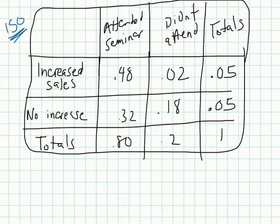So the question is, what's the probability that someone who attended, so we're looking at who attended, also had an increase in sales? Well, one way you've got to figure this out is to use relative frequency.